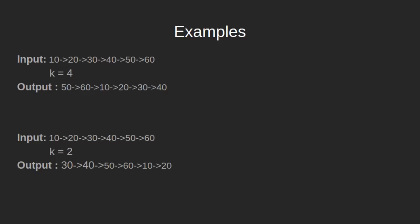In the second example, we have given a linked list 10, 20, 30, 40, 50, 60 and value of k as 2, meaning we have to rotate the linked list 2 times counter-clockwise. After the rotations, the linked list becomes 30, 40, 50, 60, 10, 20.